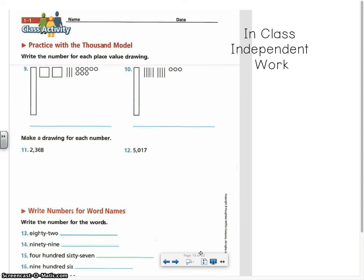Okay, this is your assignment or class activity that you might need to use a thousands bar for. And again, we're going to read through those directions for you. Your first set of directions are to write the number for each place value drawing. So again, for 9 and 10, you have a place value drawing. You need to read it or interpret it and write that number in standard form on the lines below. The next set of directions for numbers 11 and 12 are to make a drawing for each number. So for 11, you need to represent the number 2,368 using a place value drawing. For number 12, you need to represent the number 5,017 using a place value drawing.